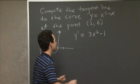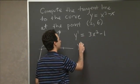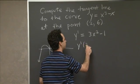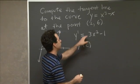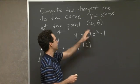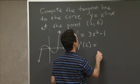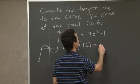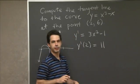We want the slope at the point x = 2. What we want for the slope of the tangent line is y'(2). That equals 3(2)² - 1, which is 12 - 1 = 11.